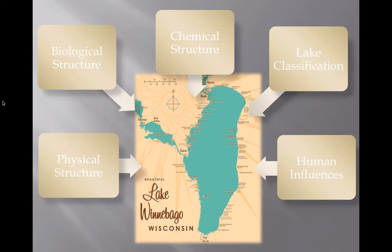I'd like to break the presentation today into five different parts. We'll talk a little bit about the physical, biological, and chemical structures of lakes, talk about lake classification and how we organize and classify lakes according to those chemical, biological, and physical structures, and then wrap up with some information on human influences on lakes — hopefully leading into some further thinking about how we influence and can greatly change the way lakes function.